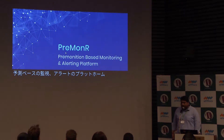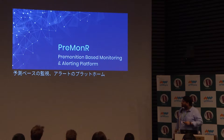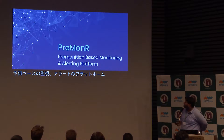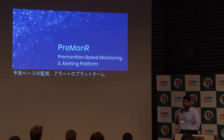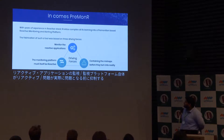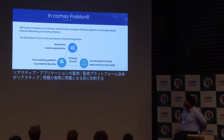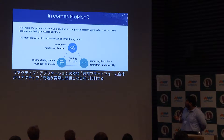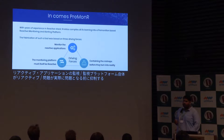After seeing all these challenges, we at Noldus started working on a tool called Premonar — a premonition-based monitoring and alerting platform. By its very definition, it works on premonition: before any mishap has occurred, it proactively tries to alert that something might go down. With years of experience in reactive stack, Noldus compiled all its learnings into Premonar, which is based on three major driving factors: monitor the monitoring of reactive applications; the monitoring platform must itself be reactive; and containing the mishaps before they turn into reality.